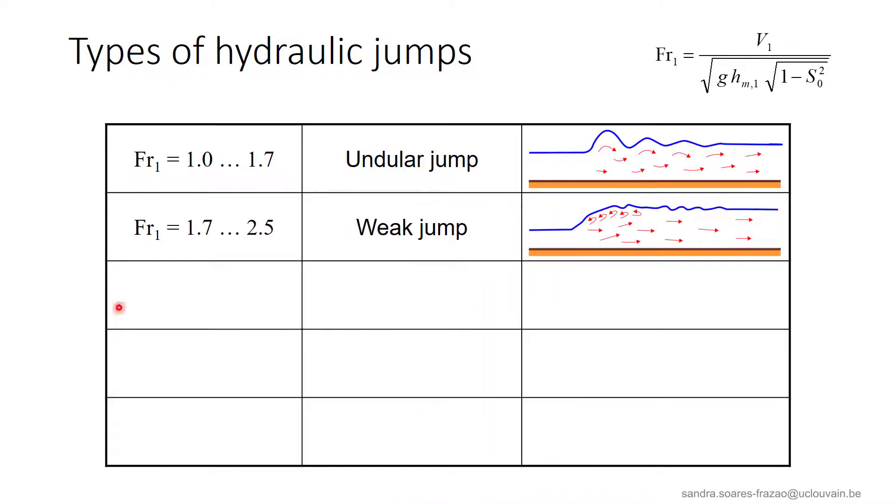For this category here of Froude numbers, smaller rollers appear, but the downstream free surface is only weakly affected. This is the weak jump.